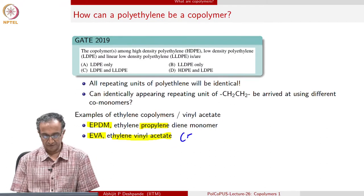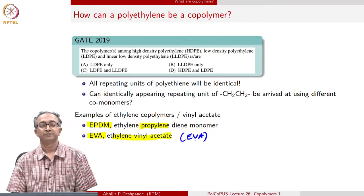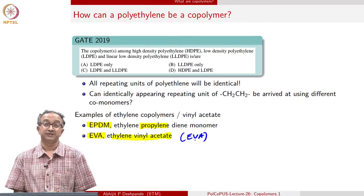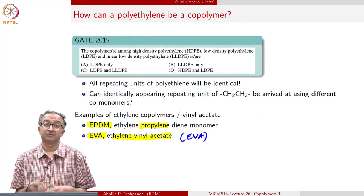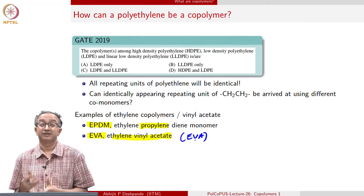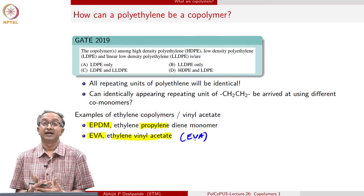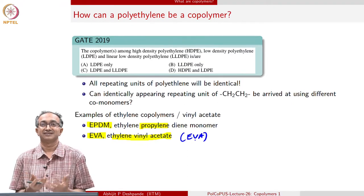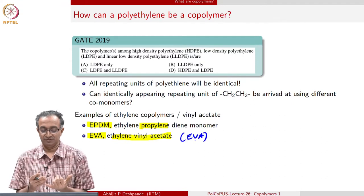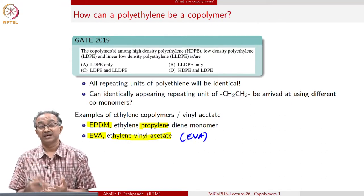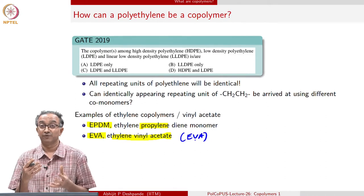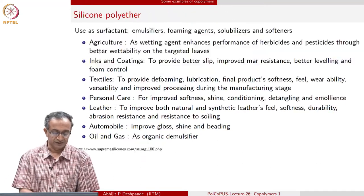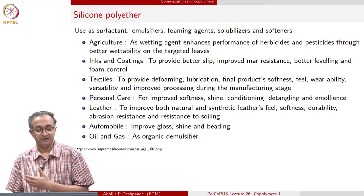Why do we do this? Why are copolymers so common? The answer is exploiting and tuning properties the way we want. Polyethylene gives us one set of properties, vinyl acetate gives us another, and we combine both. More importantly, we can control the amount of ethylene and vinyl acetate in a macromolecular chain. So the flexibility, the size of the macromolecule, and bulk properties in terms of mechanical or other responses can all be controlled. Generally, these copolymers will also be available in a variety of grades.